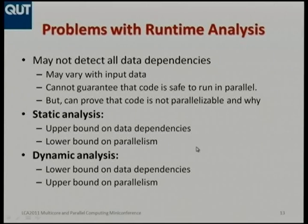The observant among you will realize there are obviously problems with this approach — it may not find all the dependencies. It only works for this particular data input; if we give the program different data, it may find additional data dependencies. We can run the program time and time again with different data sets and find more and more dependencies, but we can never be certain we've found all of them. So I can't use this technique to say definitively that you can parallelize this loop. It can point in that direction — tell the programmer this looks like parallel code — but it can also say this loop definitely cannot be parallelized, and tell you precisely why: exactly what data dependencies exist that would need to be removed to facilitate parallelization.